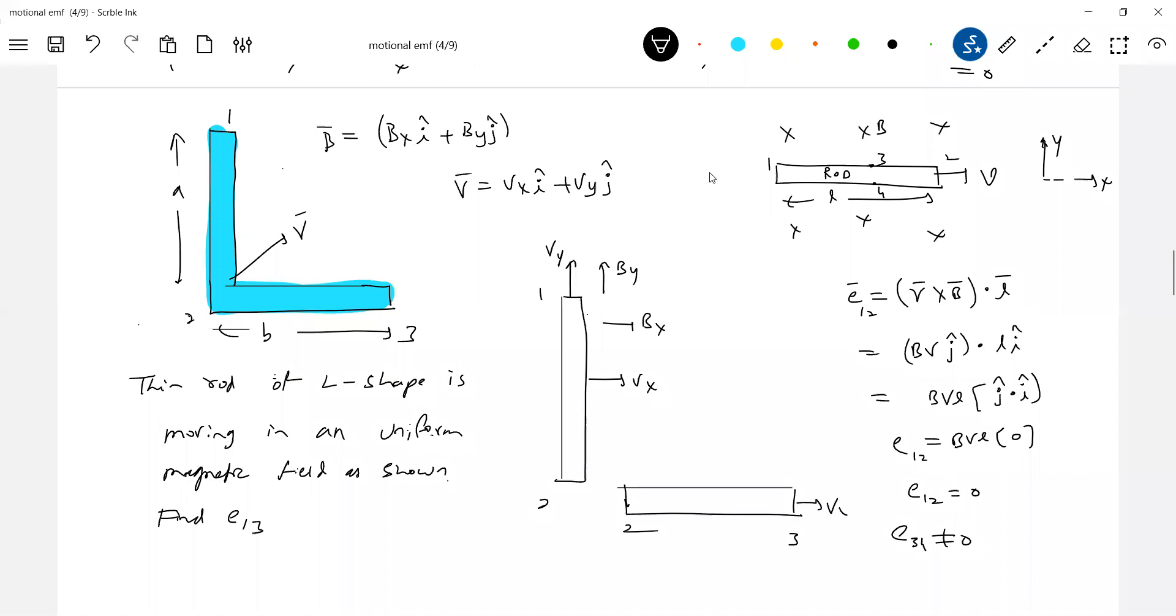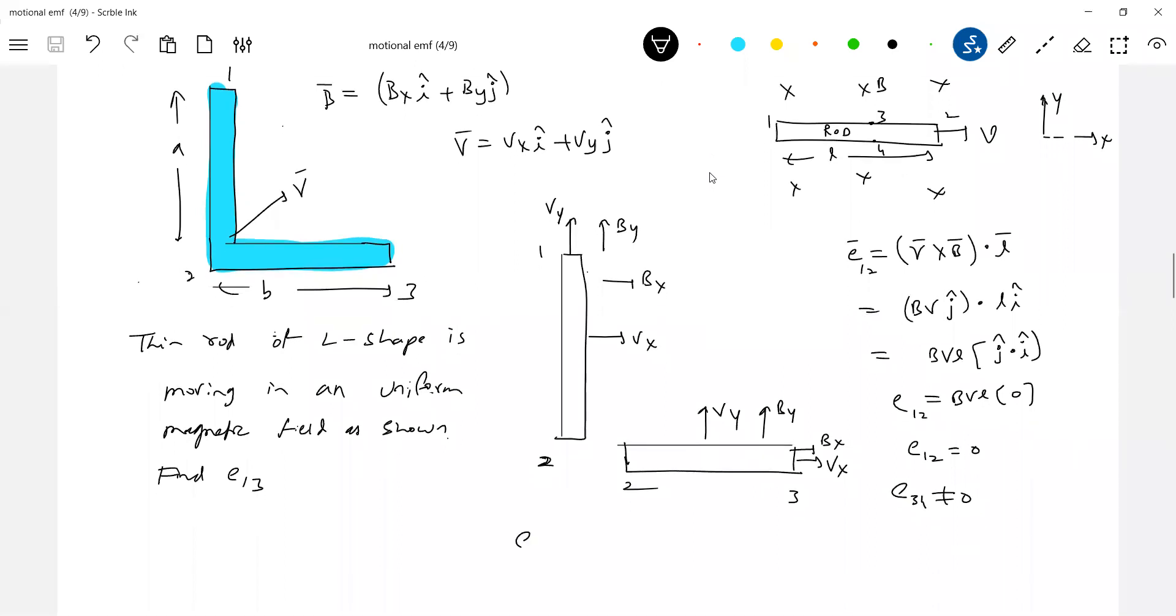Similarly you break up the problem. 2,3 - Vx this will be Vy. And we have a field Bx and By. So what is the EMF induced in the rod 2,3? V bar cross - Vx cross Bx will be zero, Vy cross By will be zero. Then Vx cross By will be non-zero and how will it be directed? It will be directed along Z axis but L bar is measured along X axis, it will be zero. Similarly Vy cross Bx will be along negative Z axis. L bar is along X axis, dot product will be zero. So I'm very sure that from the mathematics E12 = 0, E23 = 0. So net EMF induced.